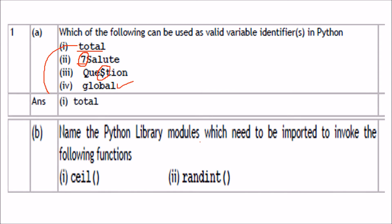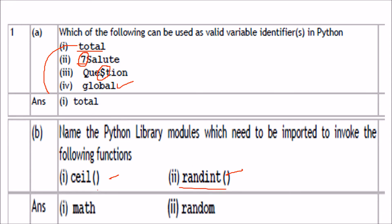Name the Python library modules which need to be imported to invoke the functions 'ceil' and 'randint'. Wherever 'rand' comes, you have to import the 'random' module, and for 'ceil' you need to import 'math'. So the answers are math and random.